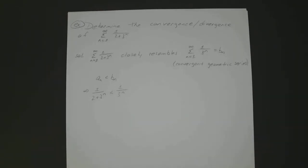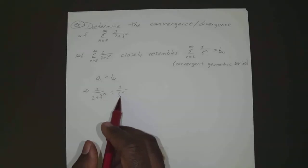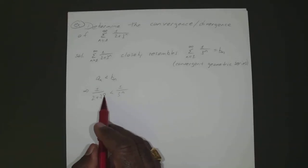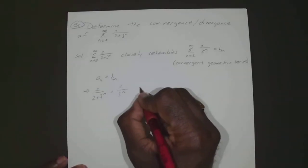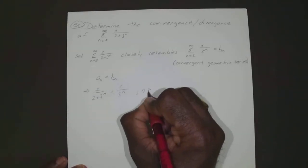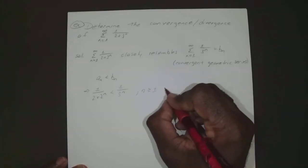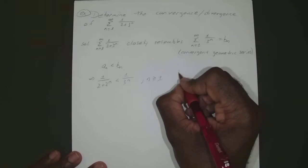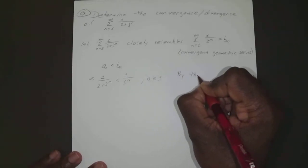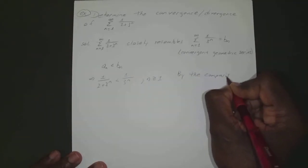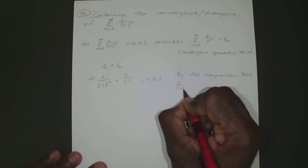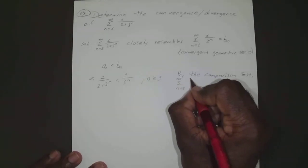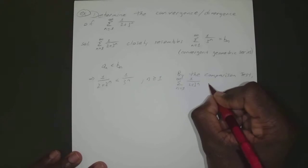If you plug in n=1, 1/5 is less than 1/3. Plug in n=2, 1/11 is less than 1/9. So as n gets bigger and bigger, that's still going to be true. By the comparison test, the sum from n equals 1 to infinity of 1 over 2 plus 3 to the n converges.